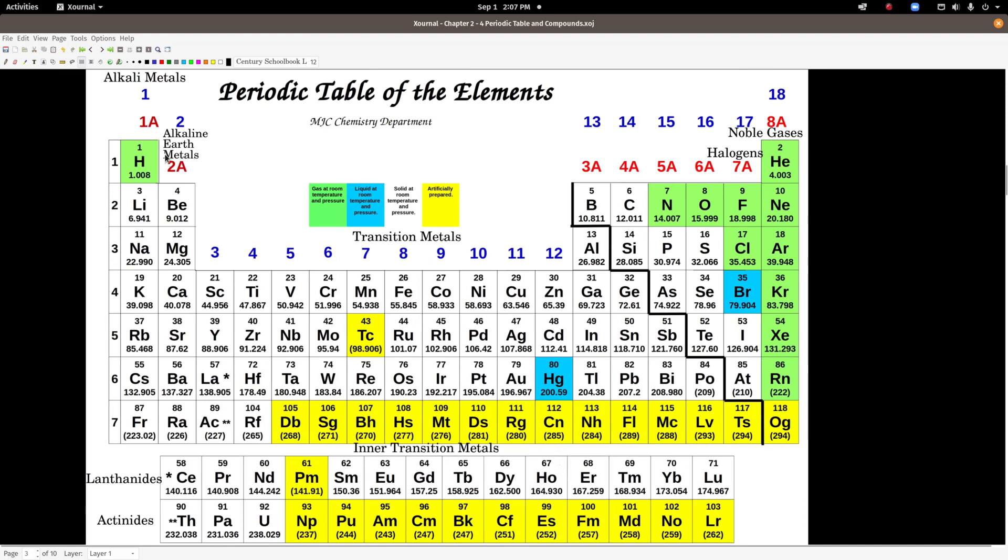These numbers up here, the blue ones are the 1, 2, 3, 4, numbering the columns. That's one system for numbering each column, column 14, 15, and so on. The red ones, the 1A, 2A, 3A, 4A, that's a different way. That has some different information which we'll see when we talk about valence electrons in a different module.